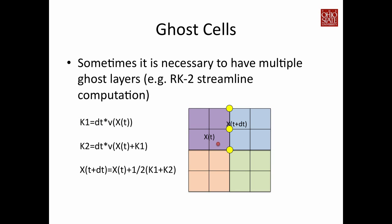Another example of why ghost cells are needed is particle advection from flow visualization. To determine the next particle position, you move the particle to an intermediate position — from x(T) to x(T) + K1. This point might fall outside the data owned by the processor at the upper left corner. You therefore need to extend the data and provide it to the processor performing particle advection, so it has enough information to complete one integration step and obtain the final particle position. This additional data is called ghost cells.